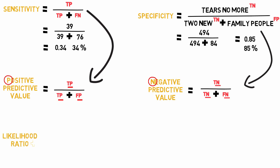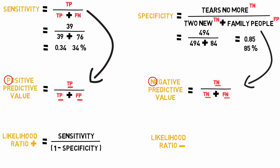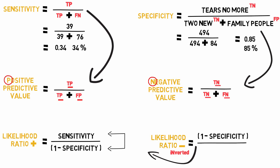Likelihood ratio positive equals sensitivity divided by 1 minus specificity. To remember which goes on top, recall the order of the story: sensitivity was discussed first, then specificity. Likelihood ratio negative is the same but inverted — the N for negative means sensitivity goes to the bottom and 1 minus specificity goes to the top, then there's a second inversion so sensitivity returns to the top and specificity goes underneath.